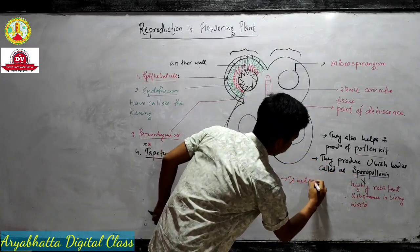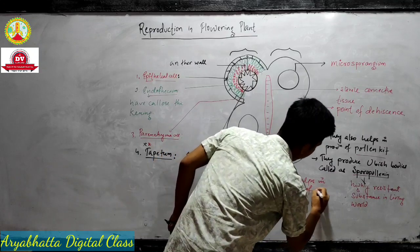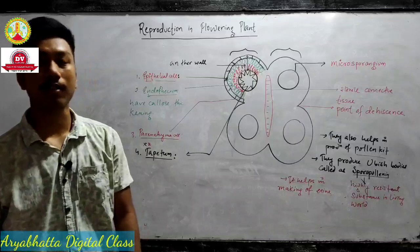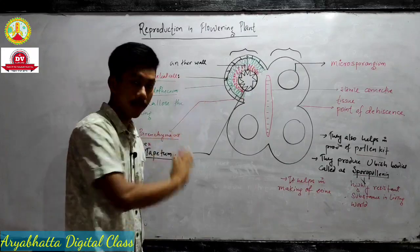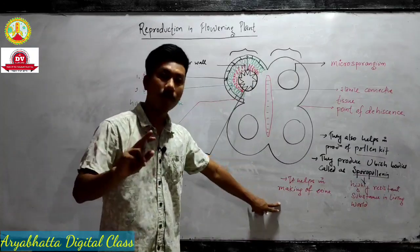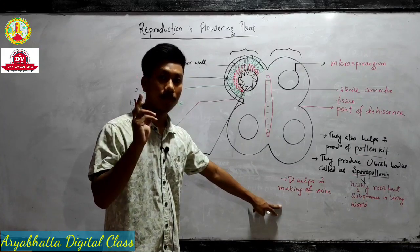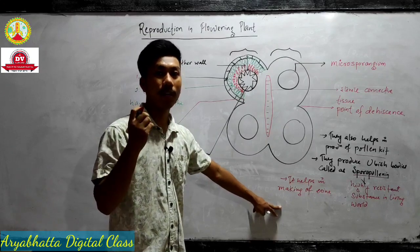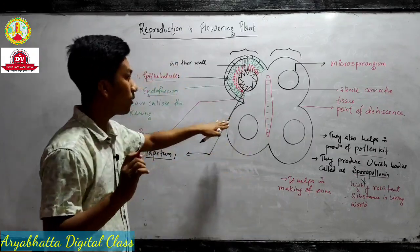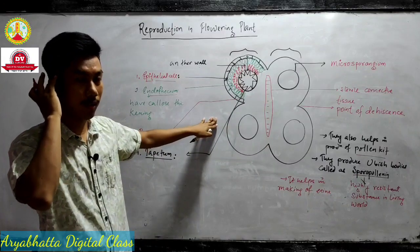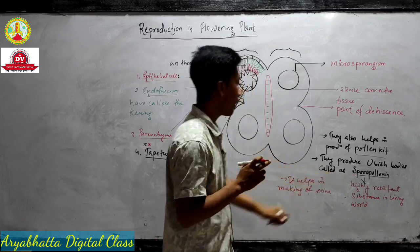Sporopollenin also helps in the making of exine. Exine are the outer layers that are present in pollen grains. Pollen grains are the male reproductive structure — the male gametophyte in the case of plants. So sporopollenin, produced by tapetum, helps in making the exine of pollen grains.